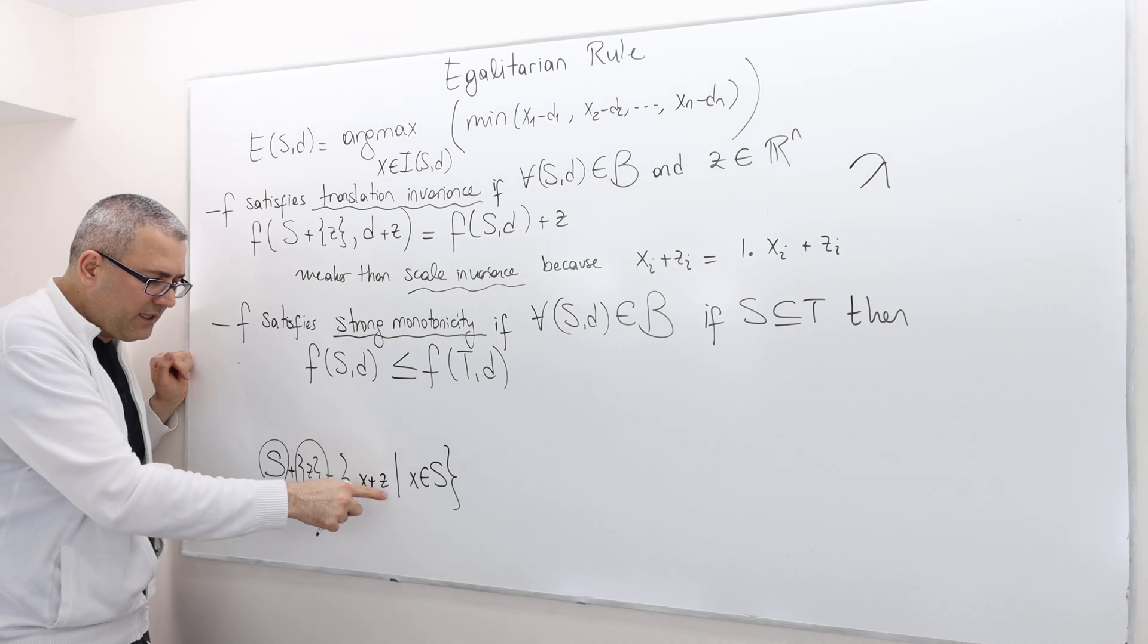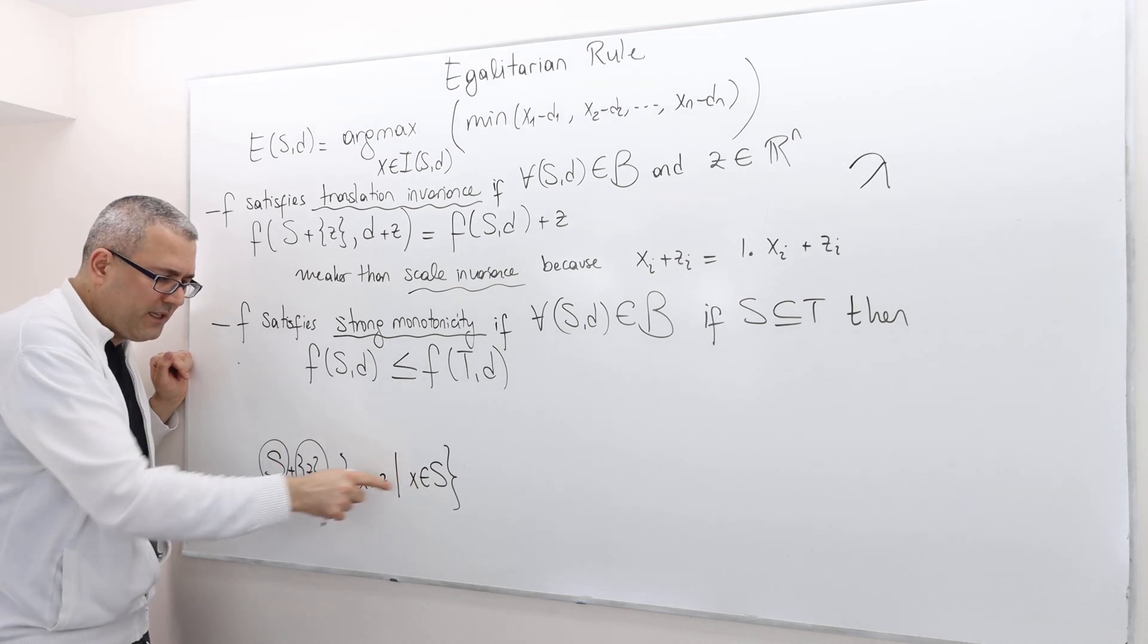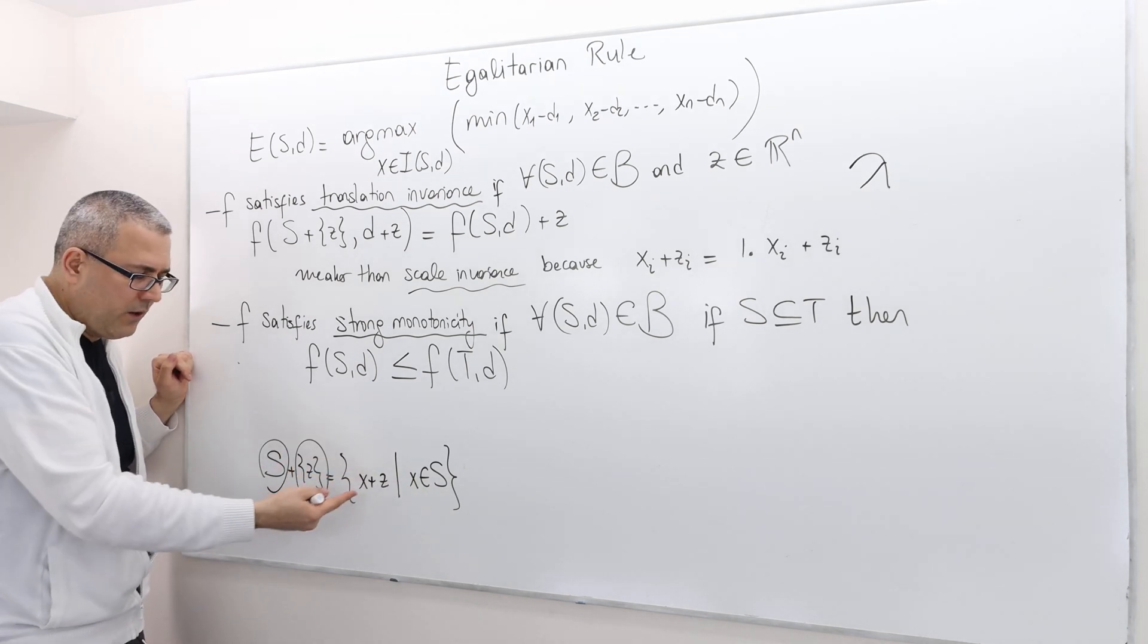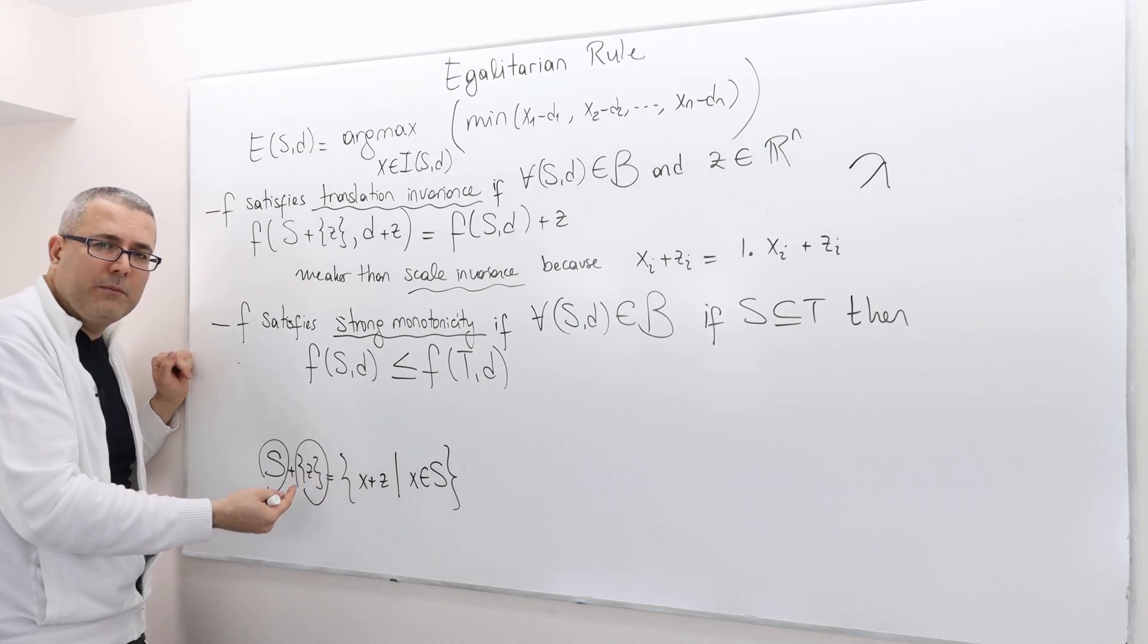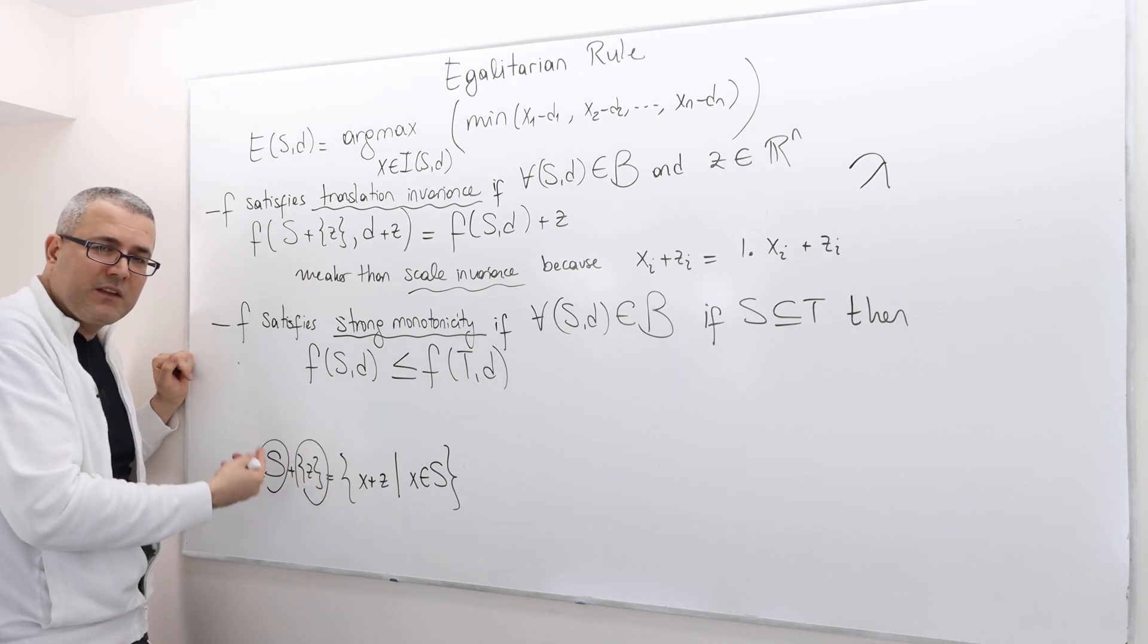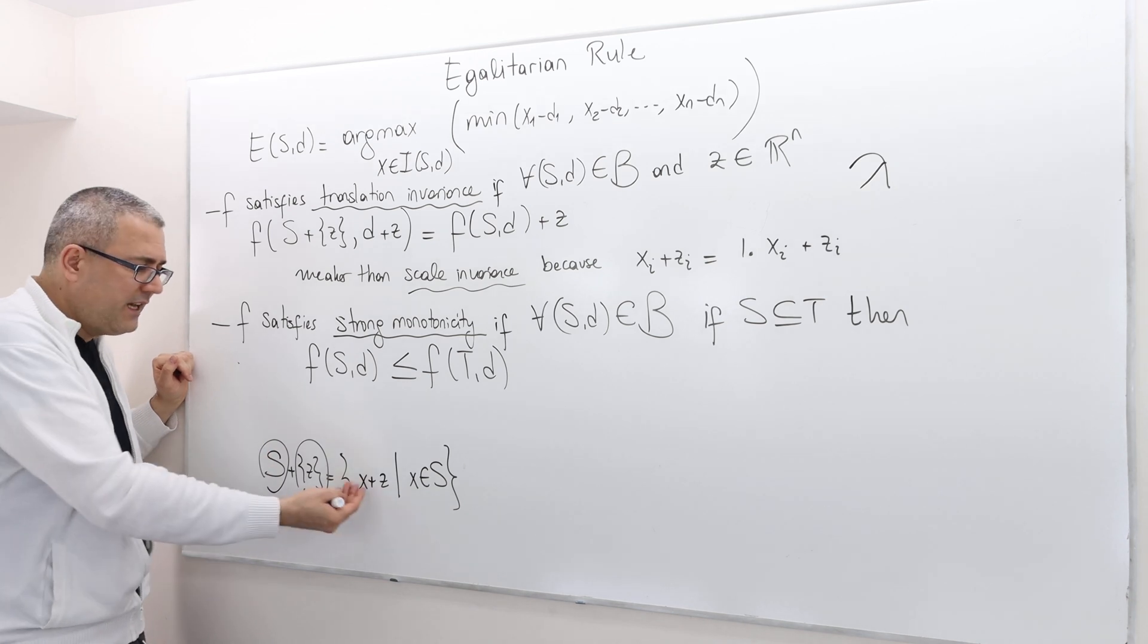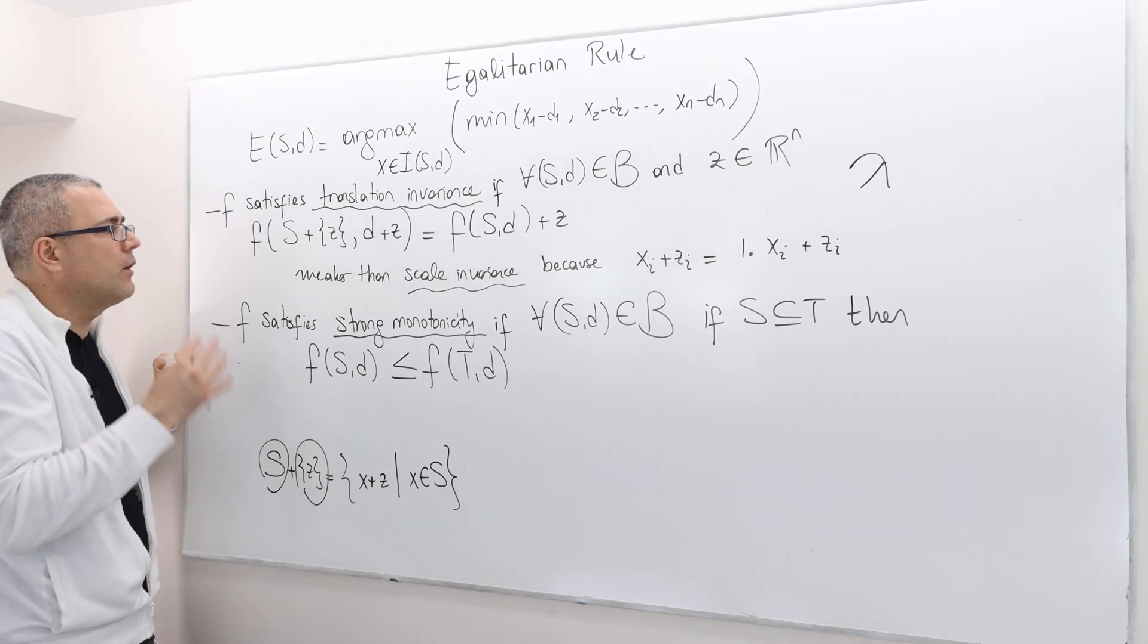So it's basically x plus z, where x is a vector coming from set S, Z is a vector. Both of them are coming from R^n. So basically S plus Z, the set S plus the set Z, is nothing but x plus z.